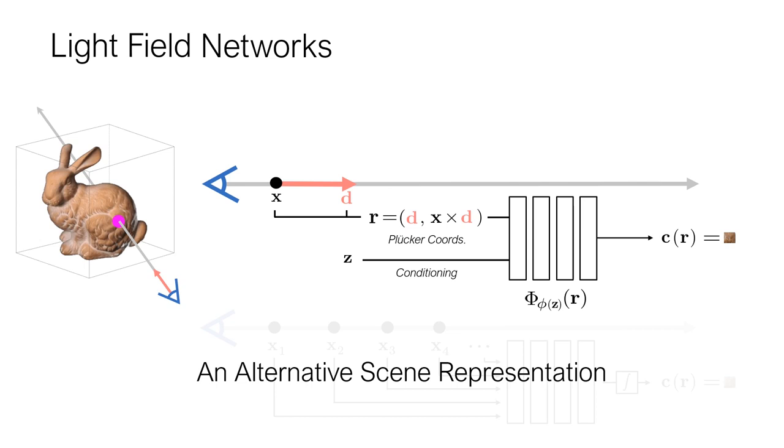We propose light field networks as an alternative 3D scene representation, which encodes both geometry and appearance of 3D scenes while allowing for single-sample rendering of rays, which dramatically speeds up both rendering and training.